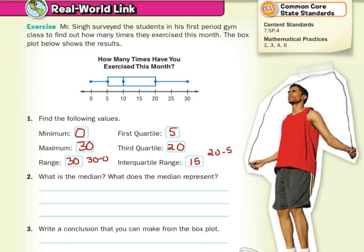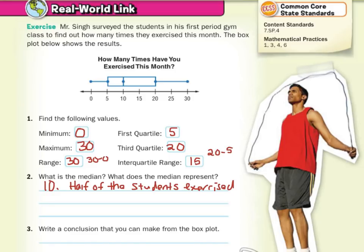What is the median? The median is represented in the box plot here, which is 10. What this represents is the fact that half of the students exercised fewer than 10 times during the month.